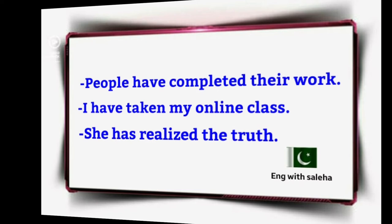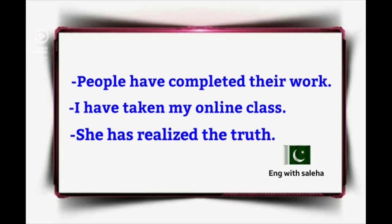For example: 'People have completed their work' — لوگ اپنا کام مکمل کر چکے ہیں. The subject is 'people' (plural), so we use 'have' not 'has'. People have completed — 'completed' is the third form. Then the target: their work. If this were a continuous sentence it would be: People are completing / People were completing / People will be completing their work.